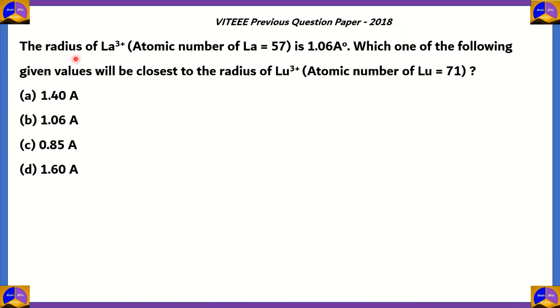Here comes our first question. The radius of La³⁺, the atomic number of lanthanum is 57, is 1.06 angstrom. Which one of the following given values will be closest to the radius of the element lutetium? This is the ion lutetium 3+, and the atomic number of lutetium is 71. We have four values here: 1.4 angstroms, 1.06 angstroms, 0.85 angstroms, 1.6 angstroms.